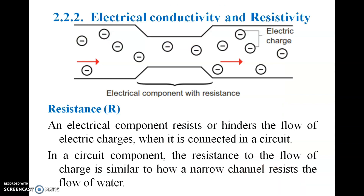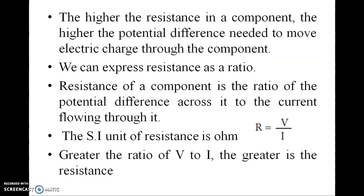A resistor is an electrical component that resists or hinders the flow of electric charge when connected in a circuit, similar to how a narrow channel resists the flow of water. The higher the resistance of a component, the higher the potential difference needed to move electric charge through it. Resistance is expressed as a ratio: resistance of a component equals the ratio of potential difference across it to the current through it (V/I).